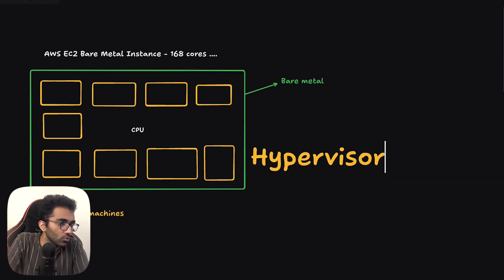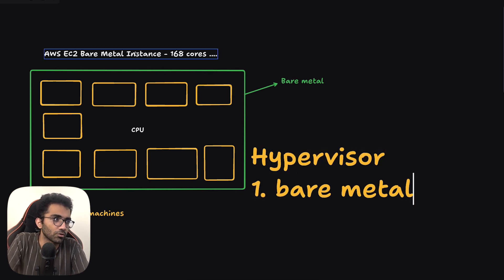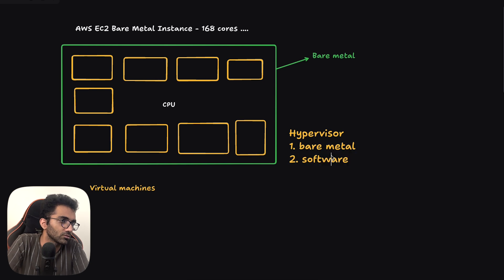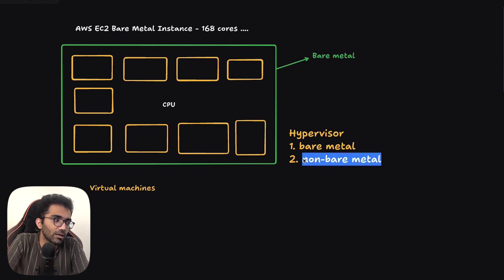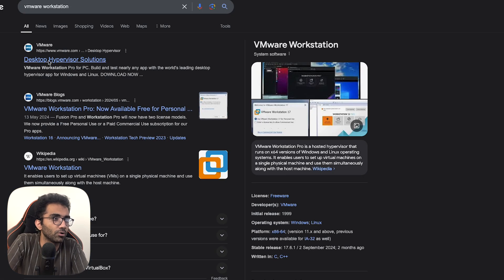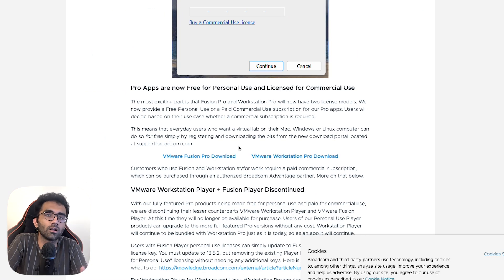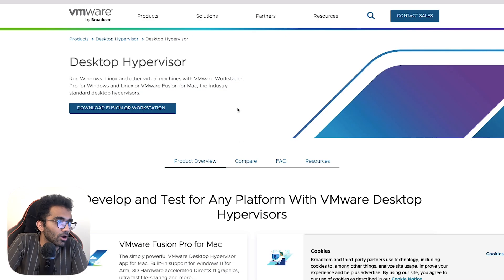A hypervisor is a piece of software or hardware that allows your single physical host to act as if there are multiple virtual machines. In terms of hypervisors, there are two kinds: one that runs on bare metal, and another that runs at the software level. The best example of the software-level one would be VMware Workstation — it itself says 'desktop hypervisor solution.' These software hypervisors allow you to run a virtual machine inside your computer.